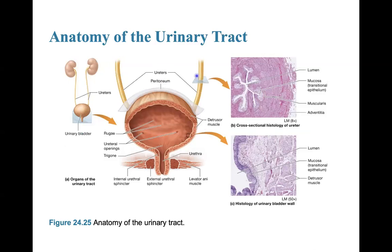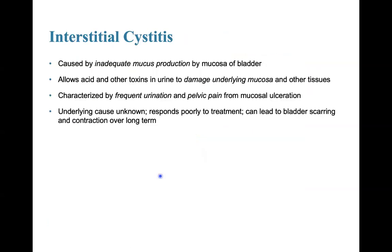Here we can see the two ureters, the bladder, and the urethra. Interstitial cystitis is caused by inadequate mucous production by the mucosa of the bladder, which allows acid and other toxins in the urine to damage the underlying mucosa and other tissues. It is characterized by frequent urination and pelvic pain, the underlying causes are unknown, it responds poorly to treatment, and it can lead to bladder scarring and contraction over time.